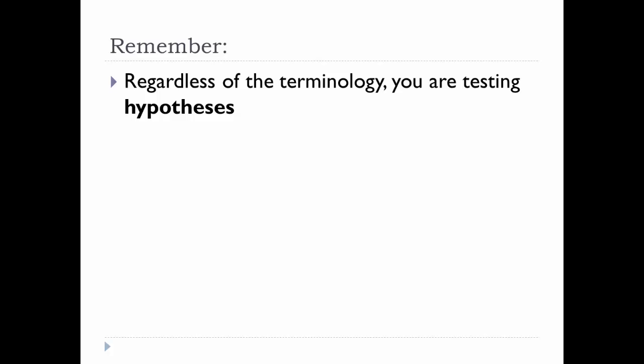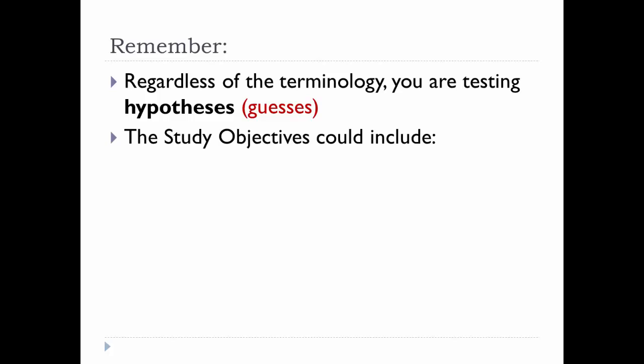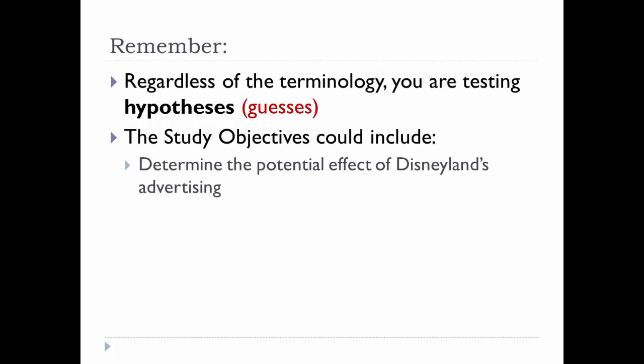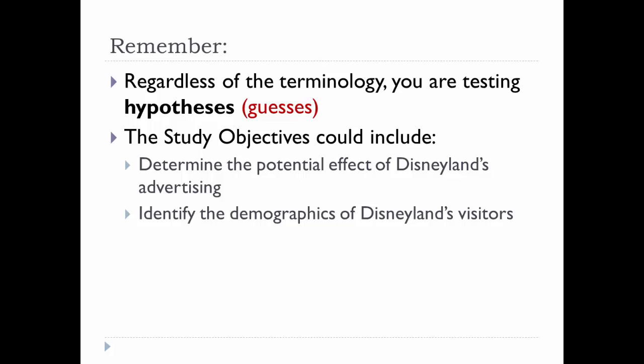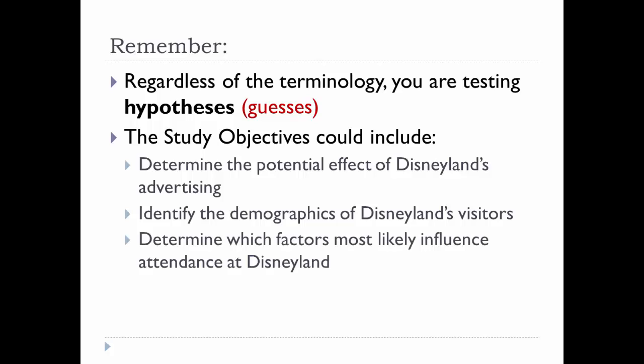Regardless of the terminology — research hypothesis, research questions, study objectives, study goals — you are testing hypotheses. You are guessing and testing the guesses. Outside of academia, we often use the term objectives. Under the topic of Disneyland, you could develop study objectives such as: determine the potential effect of Disneyland's advertising, identify the demographics of Disneyland's visitors, or determine which factors most likely influence attendance at Disneyland.